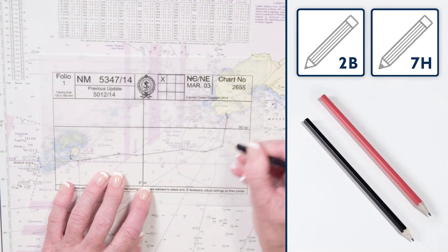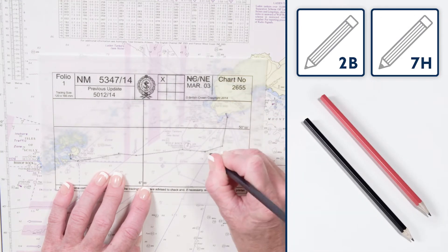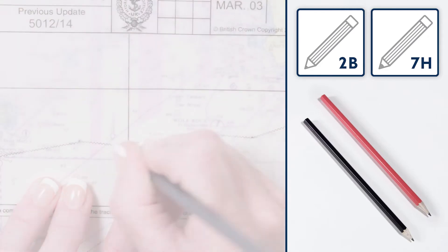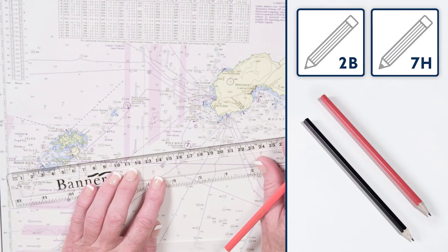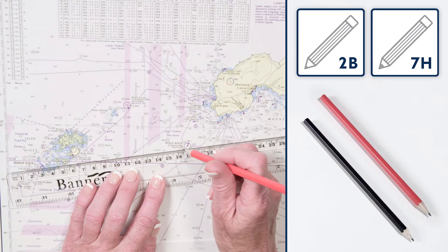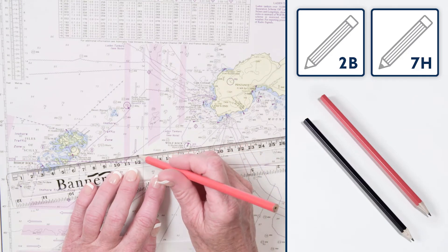A 7H pencil is suitable for pinpointing a position. A 2B pencil is used for normal chart work, such as a guideline for a cable.